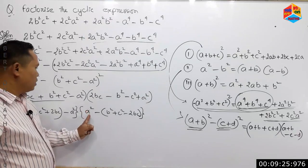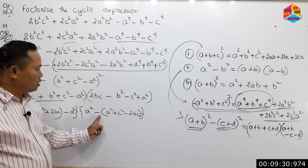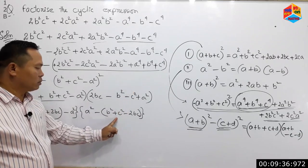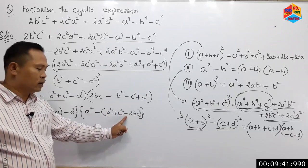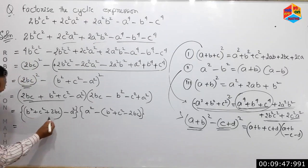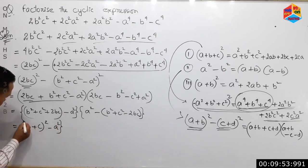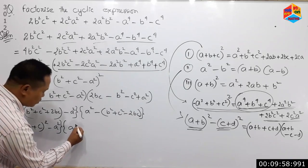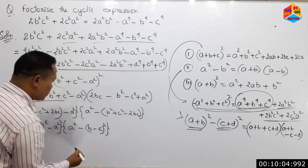Now we have to write: a squared minus b minus c, whole squared, which gives b minus c.